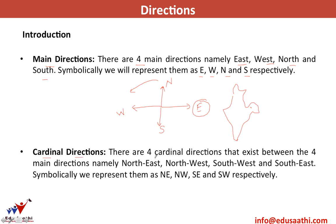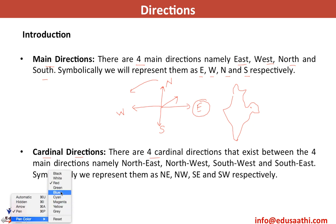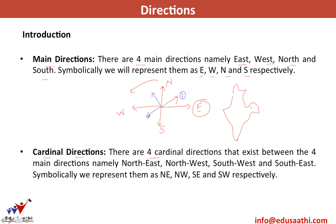There are four cardinal directions which lie in between the main directions. These are equally distant from the main directions, so the angle between a main direction and a cardinal direction is 45 degrees. The cardinal directions are Northeast, Northwest, Southwest, and Southeast.